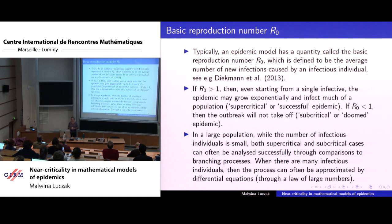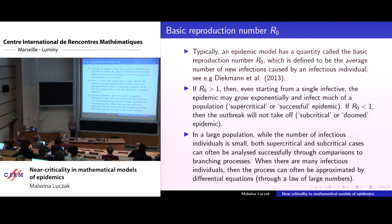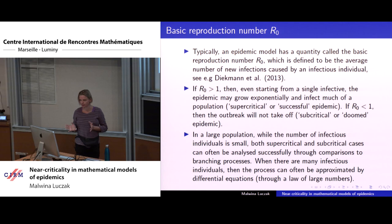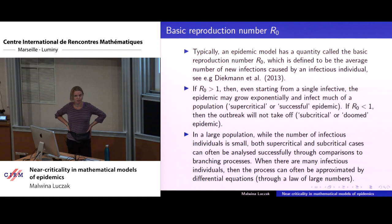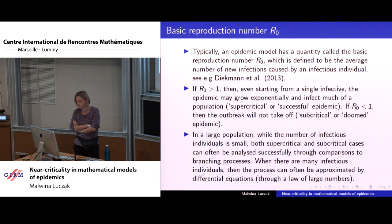Let me give you a little background to what I'm going to talk about. As we all know very well, epidemic models each have a quantity which is the basic reproduction number R0, defined to be the average number of new infections caused by an infectious individual. If R0 is greater than one, then even starting from a single infective, the epidemic may grow exponentially and infect much of the population — we call that a supercritical successful epidemic. On the other hand, if R0 is less than one, the outbreak will not take off — that we call a subcritical doomed epidemic.